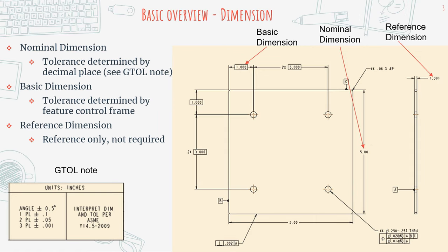Now let's look at an actual engineering drawing, which has a lot of dimensions and other features. A nominal dimension is your standard dimension — pretty bare-bone and easy to define. The tolerance of a nominal dimension will be specified within a GTOL note. If you look at the number of decimal places in your nominal tolerance, that tells you what the tolerance is. Because we have two decimal places, we know that these nominal dimensions are plus or minus 0.05 for the tolerance.